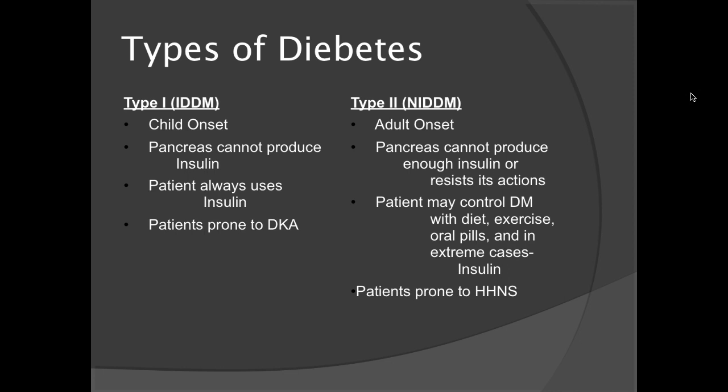Two types of diabetes. There's Type 1, insulin-dependent diabetes mellitus. This occurs during childhood, when the pancreas cannot produce insulin at all. The patient always uses insulin. These patients are prone to frequent DKA, diabetic ketoacidosis, usually.